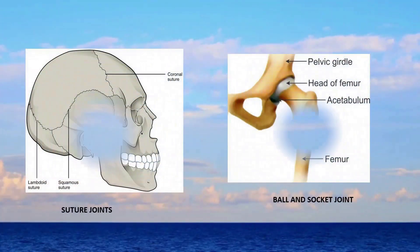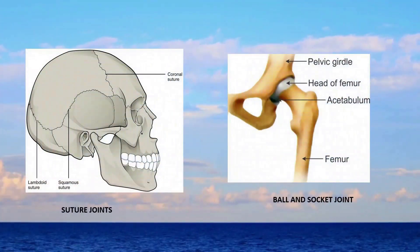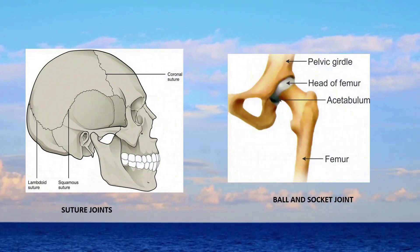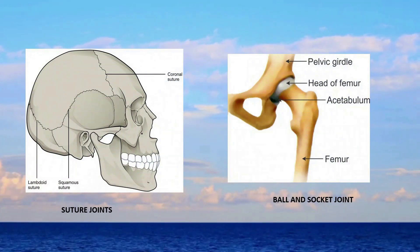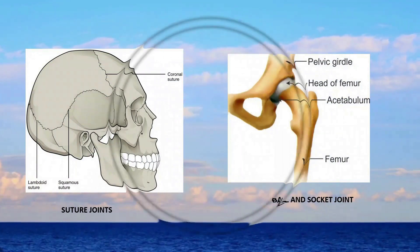This diagram shows various suture joints in the cranium, and the ball and socket joint formed by the head of the femur and acetabulum of the pelvic girdle.